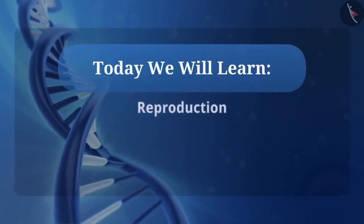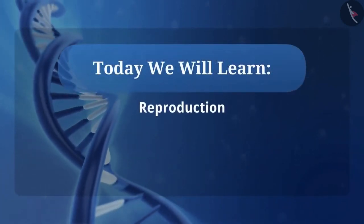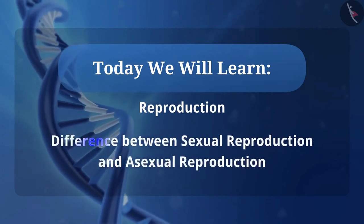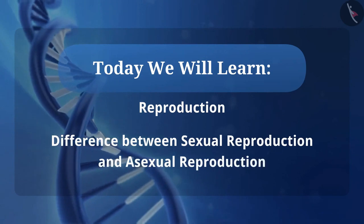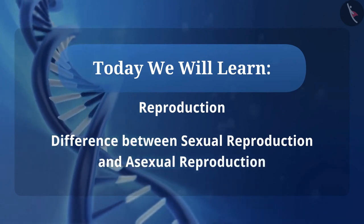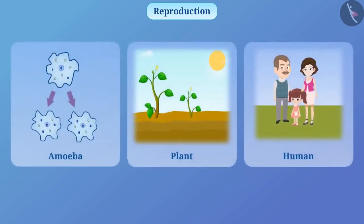Today we will learn important things about reproduction and the difference between sexual reproduction and asexual reproduction. Reproduction is a process in which an organism produces its offspring. For example, an amoeba gives birth to another amoeba, a plant produces another plant similar to it, and human beings produce children.